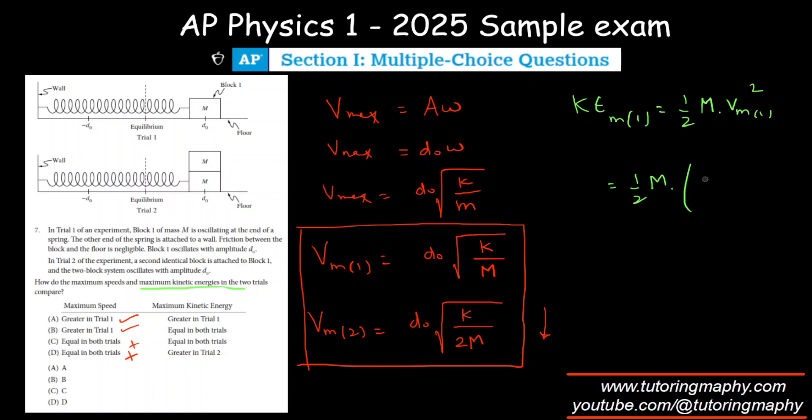We square this entire thing: D not times the square root of K over M. If you square this, it will become D not squared, and the radicals will disappear, so it will be K over M. The M and M will cancel, so it will be half D not squared times K.